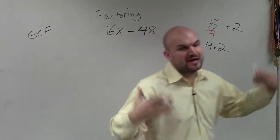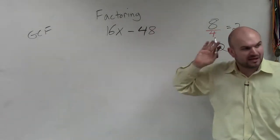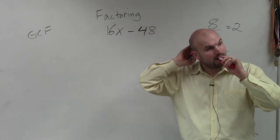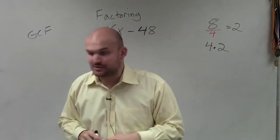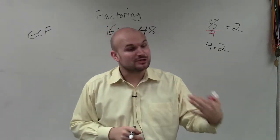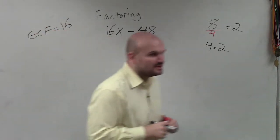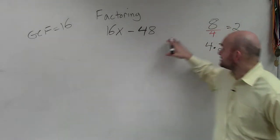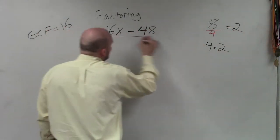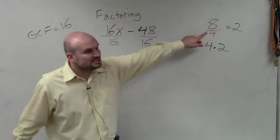What is the greatest common factor? That means a number that divides into 16x as well as 48. A student suggested 7, but you could look at 8, 2, or 4 — they all divide into it. However, the largest number that actually divides into it is 16. So now I am going to take my GCF and divide both of my terms by 16.